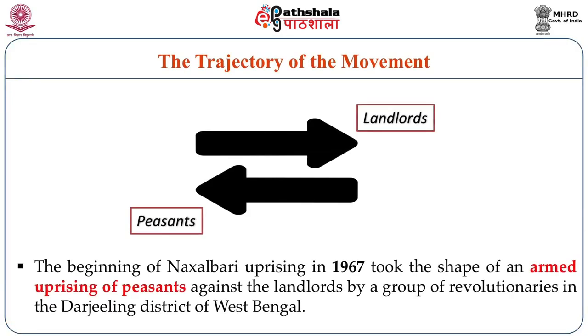The Naxalite movement started in a district called Naxalbari in the district of Jalpaiguri, West Bengal, in the year 1967. There was an armed resistance of peasants against the landlords, and revolutionaries came from Kolkata to support the movement. That peasant movement raised issues like land ownership — the tiller is the owner of the land — and in that process, many zamindars and land holders were personally attacked.